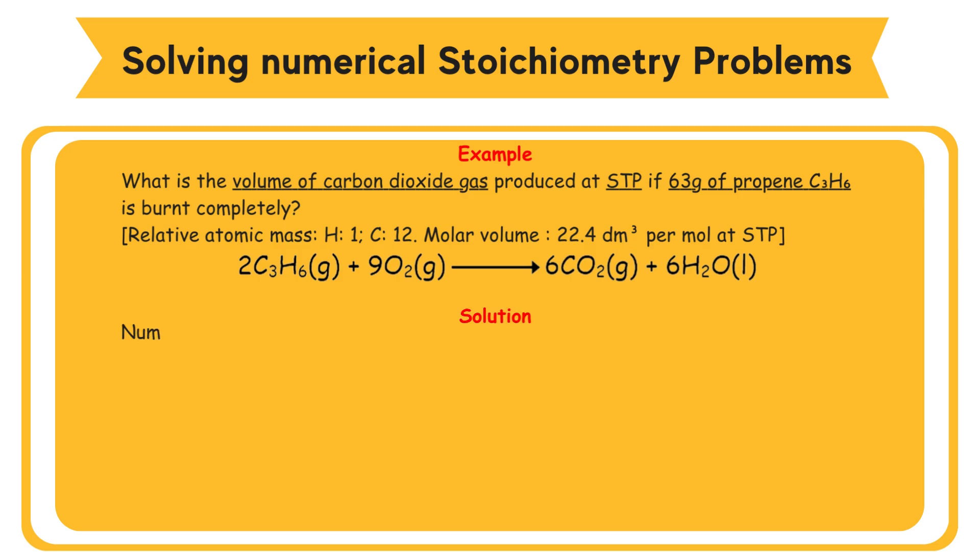Solution. Number of moles of C3H6 equals mass divided by molar mass: 63 divided by (3 times 12 plus 6 times 1) equals 63 divided by 42 equals 1.5 moles. Based on the equation, 2 moles of C3H6 produce 6 moles of CO2. This means that 1 mole of C3H6 produces 3 moles of CO2. So, 1.5 moles of C3H6 produces 1.5 times 3 moles, which are 4.5 moles of CO2.